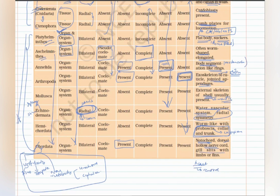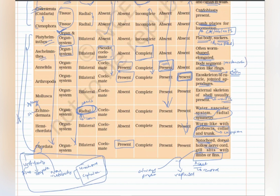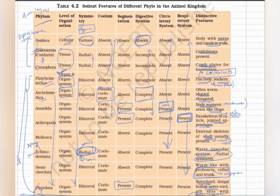Chordates have gill slits, which may be present throughout their life or replaced by lungs in some chordates. At some point in their life they will show gill slits. They either have limbs or fins — limbs in Tetrapoda and fins in cyclostomes and fishes. Urochordates and Cephalochordates do not show either fins or limbs, but most animals in the chordate group will show limbs or fins. With this we finish the discussion of this NCERT table.